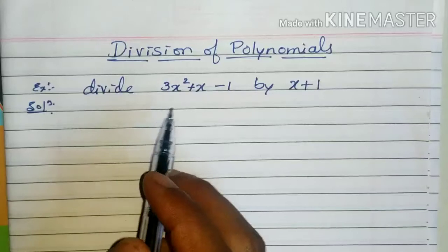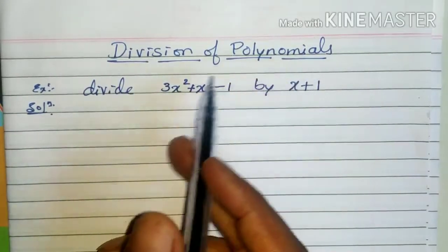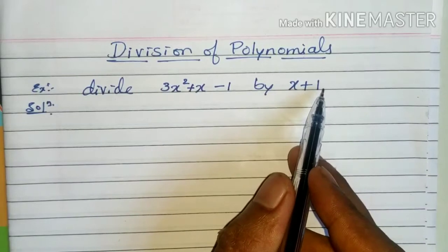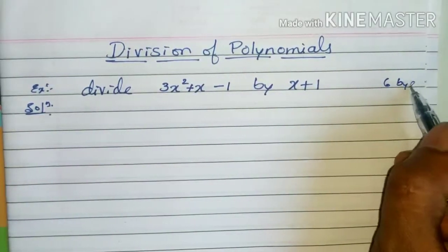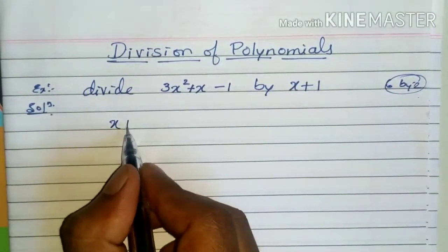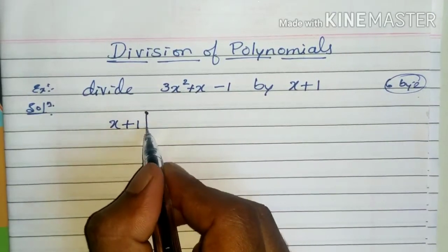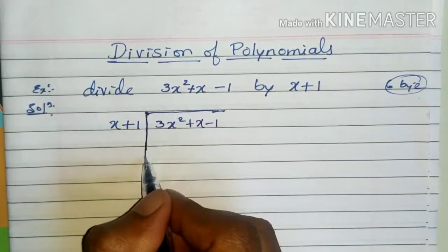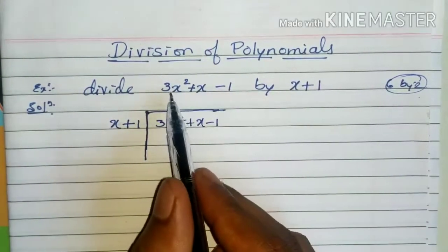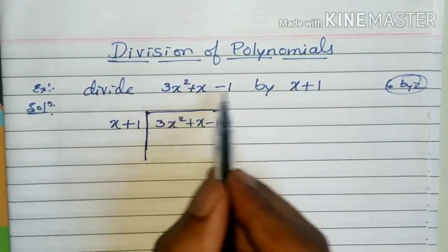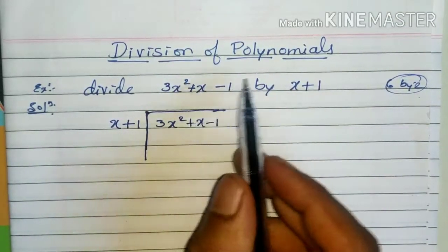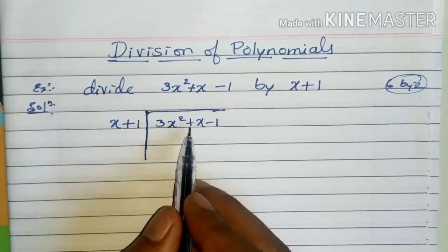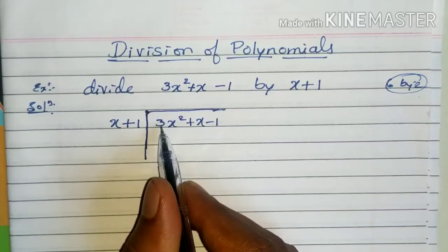In this video we shall discuss division of polynomials. For example, divide 3x² + x - 1 by x + 1 — it is just like dividing 6 by 2. We write x + 1 here, the quotient here, and 3x² + x - 1 here. This is how we set it up. The first polynomial is quadratic (degree 2) and the second is linear (degree 1).